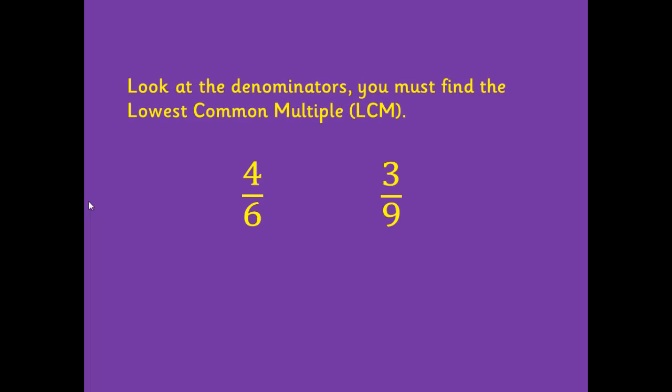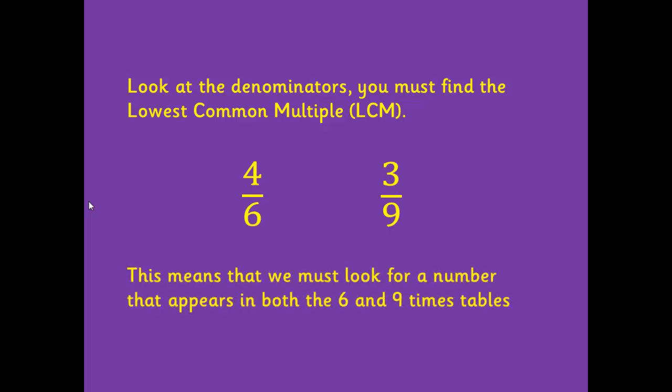What we have to do is look at the denominators and we must find the lowest common multiple of each denominator. What that means is that we must look for a number that in this case appears in both the 6 times table and the 9 times table. Let's have a look at how we do that.